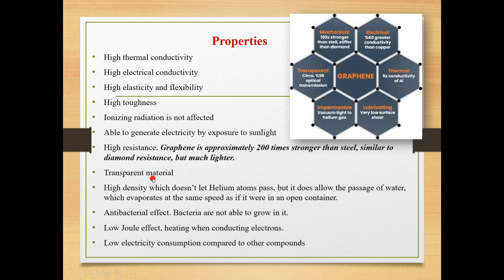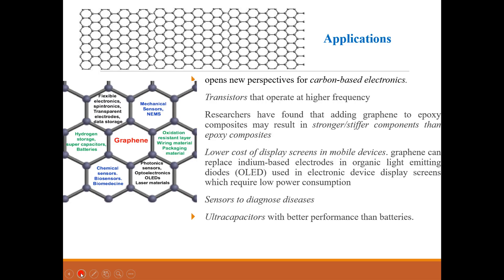Graphene is a transparent material due to its extremely small thickness. It allows passage of water but does not allow passage of helium, which is why it is used in water purification. Like CNTs, bacteria don't grow on graphene. It can conduct electricity and heat simultaneously, and it has low electricity consumption compared to other compounds.